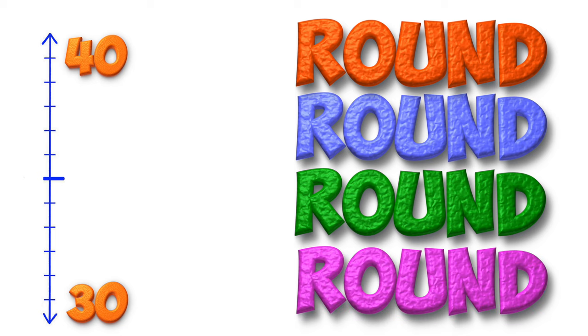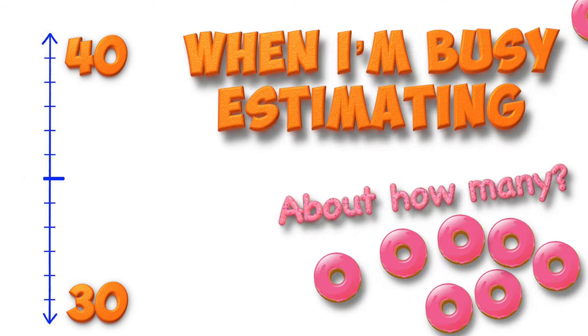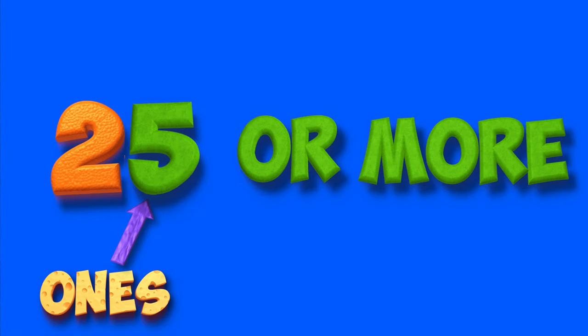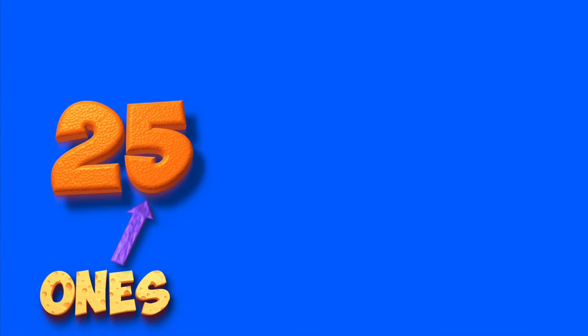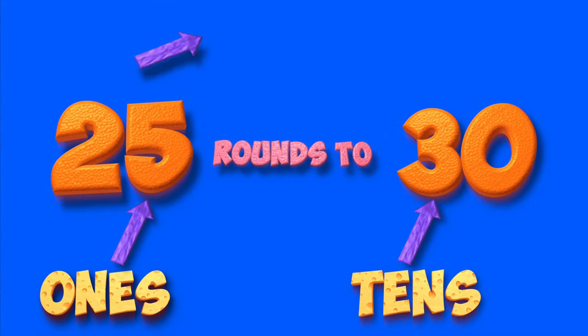Round, round, round and round. I'm rounding up or rounding down. When I'm busy estimating, I'm rounding up or rounding down. If you see five or more in the ones place — 5, 6, 7, 8, 9 — if you see five or more in the ones place, it rounds to the next ten every time.